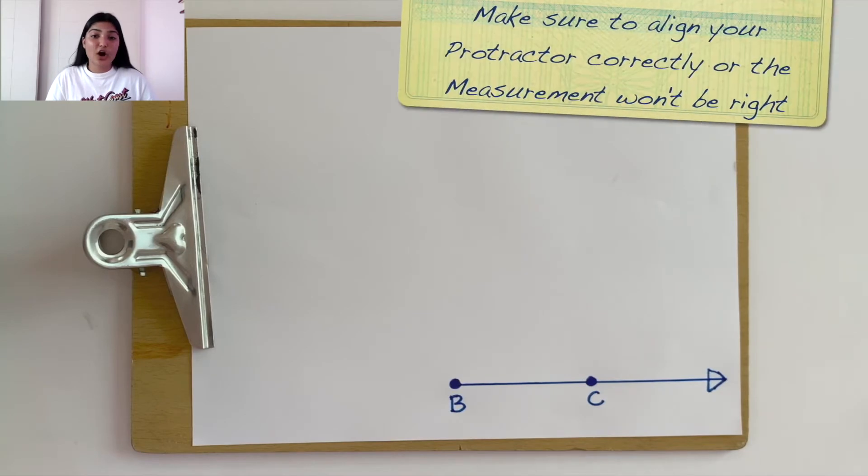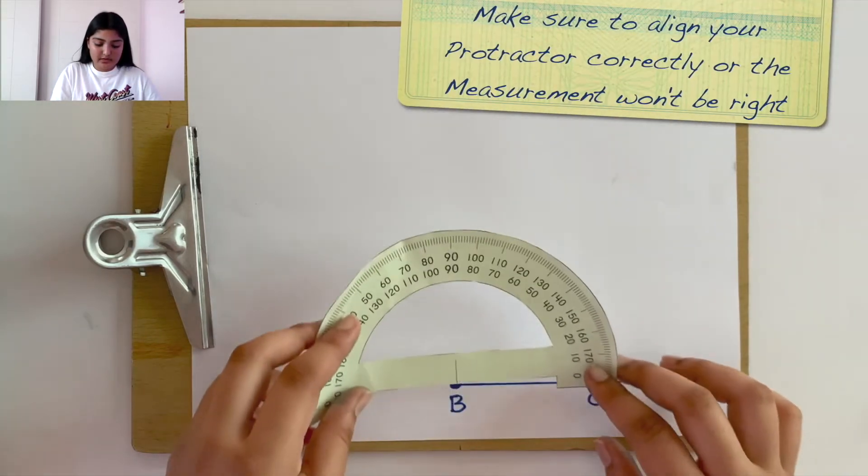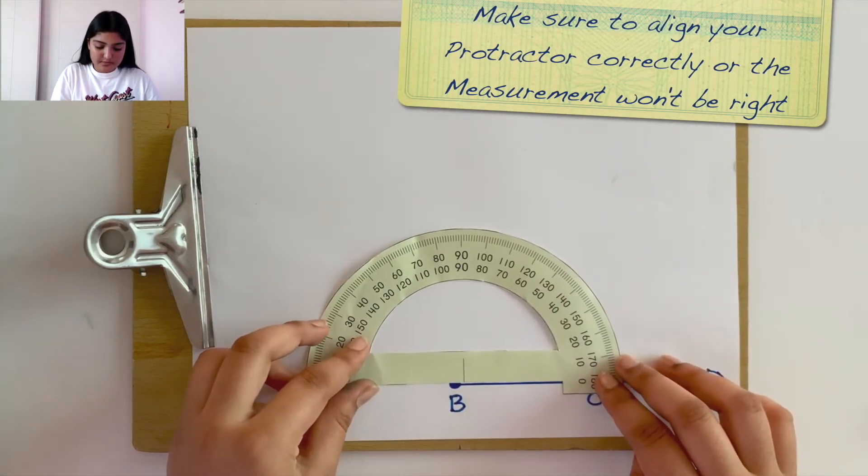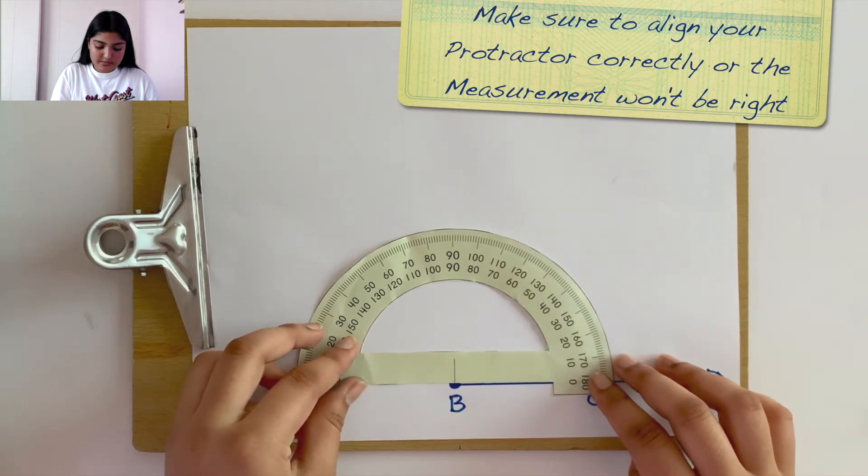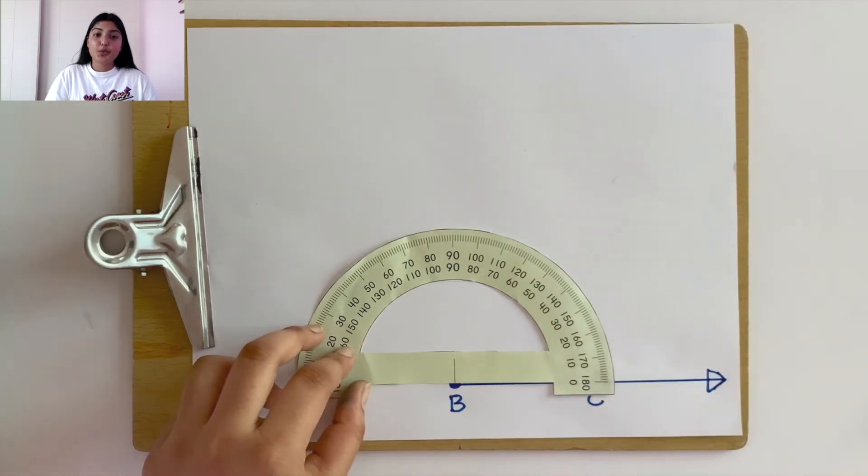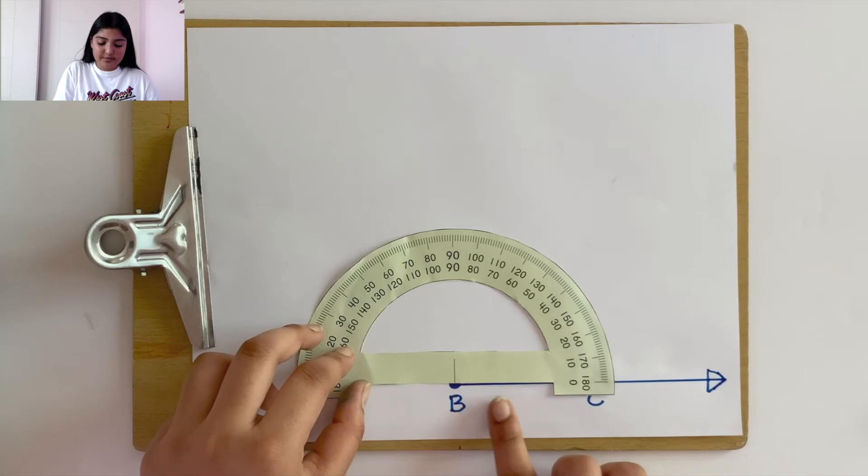And one point here and label it as C. Next, let's take our protractor.